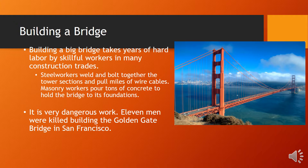Steps to building a bridge. Building a big bridge takes years of hard labor and skillful workers in many construction trades. Steel workers weld and bolt together the tower sections and pull miles of wire cables. Masonry workers pour tons of concrete and hold the bridge to its foundations. It is very dangerous work — eleven men were killed building the Golden Gate Bridge in San Francisco.